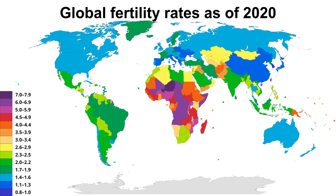Here is a map of global fertility rates as of 2020. Anywhere in dark green or any shade of blue is below replacement levels. These include most nations in Europe, Canada, Australia, Brazil, Russia, China, the United States, and many others.